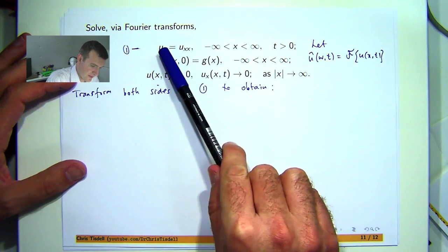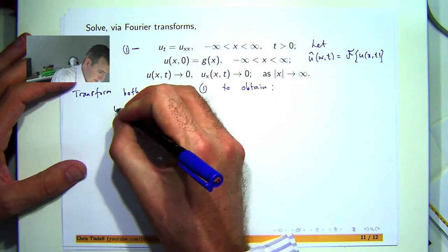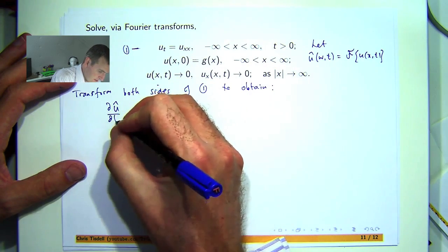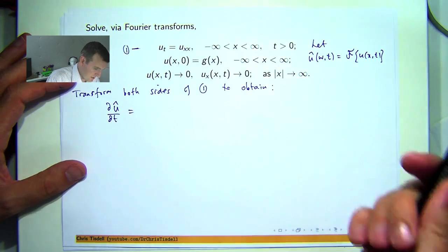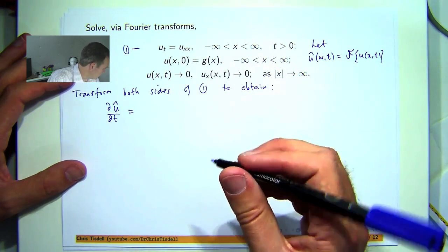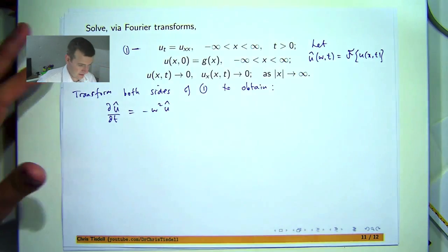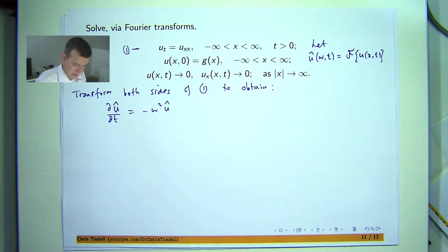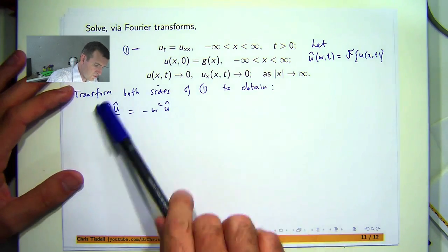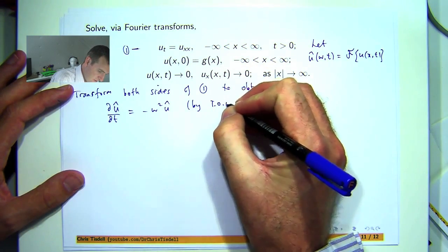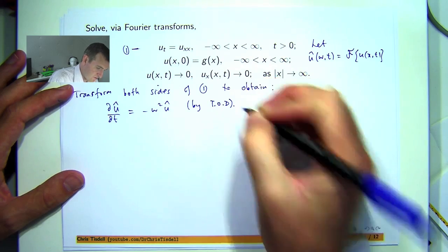So this would be the derivative of u with respect to t. And over here, using the transform of derivatives, we'll get the following. So let me just mention that we've applied the transform of derivatives here.